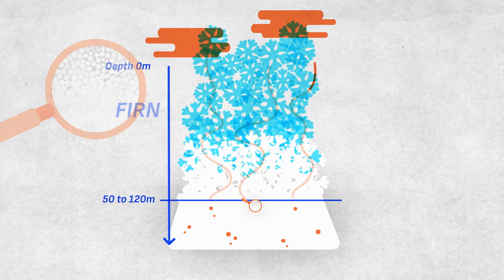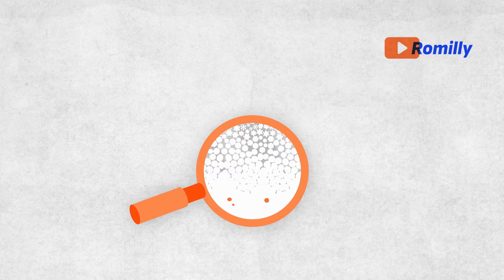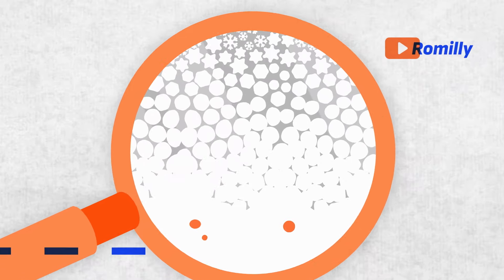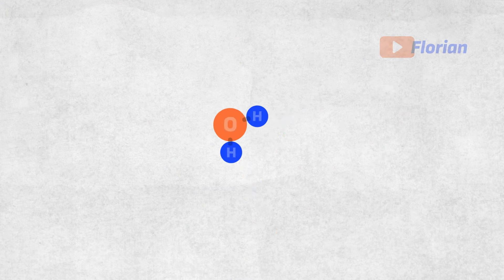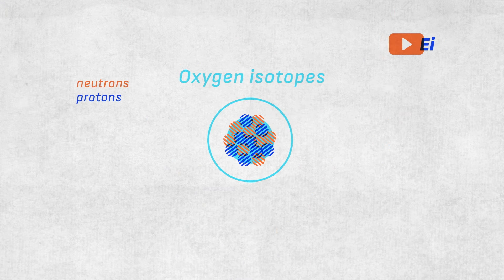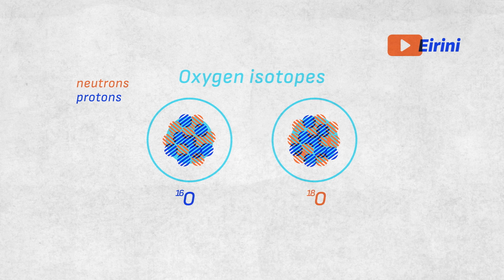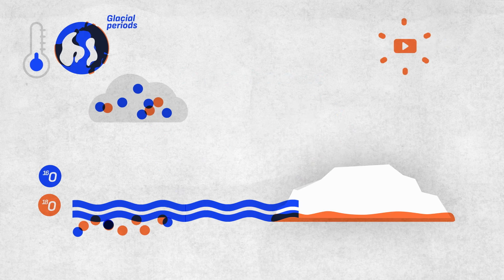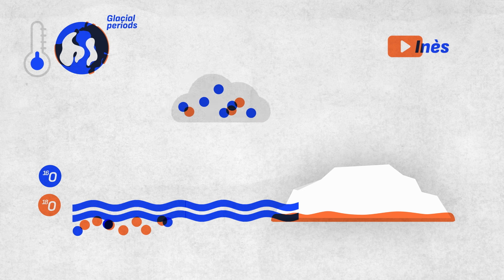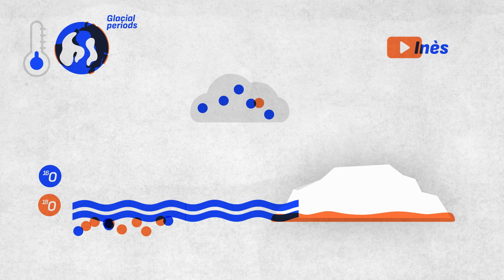The uppermost part of an ice core is called the firn. This is where the snowflakes turn into solid ice, the structure of which can be very different depending on the temperature and pressure conditions it experiences. When we look closely at the water molecules we can see that some are lighter and some are heavier. The proportions of these can tell us about the air temperature when the ice formed.